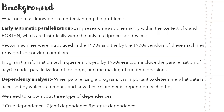Before getting into the approaches, let's look at the background — how and when automatic parallelization started. Research in this area began in 1968 by David Cook and others, within the context of C and Fortran multi-processors. Then came vector machines in the 1970s and 1980s when vendors provided vectorizing compilers. Program transformation techniques were developed in the 1990s, including parallelization of acyclic code, parallelization of loops, and making runtime decisions.